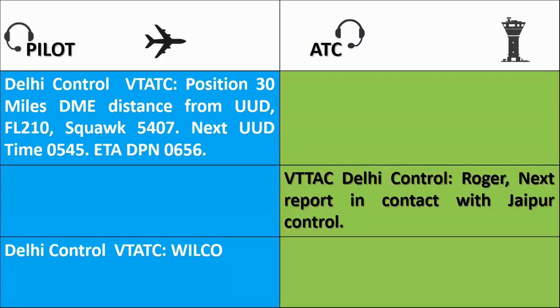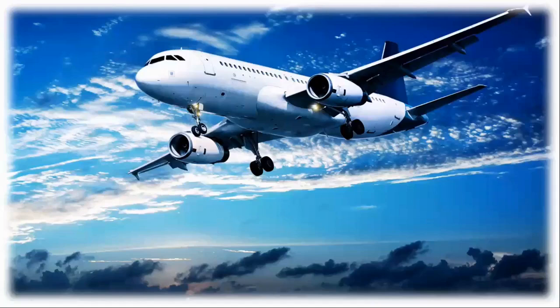'Victor Tango Alpha Tango Charlie, Delhi Control, roger. Next report in contact with Jaipur Control, 127 decimal 575. Delhi Control.' — 'Victor Tango Alpha Tango Charlie, wilco.' Remember that effective communication between pilots and ATC is essential for safe and efficient air traffic management. Always adhere to the prescribed procedures and guidelines for giving position reports to ensure accurate and timely information exchange.